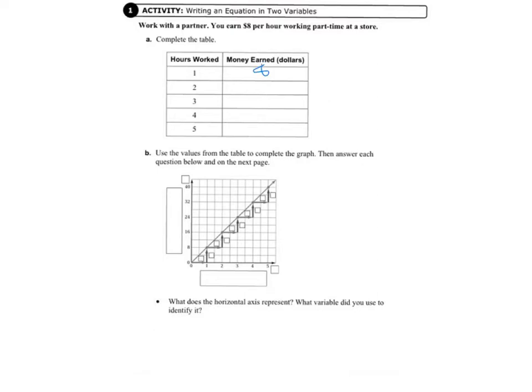If we work two hours, we earn $8 for each hour, so 8 times 2 is $16. If we work three hours, 8 times 3 is $24, so we earn $24.